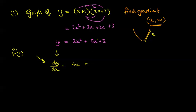...the power 1 multiplies the 5, giving 5x to the power 0, which is just 5. The constant 3 has no x, so it becomes 0. So dy/dx = 4x + 5 is the derivative function.